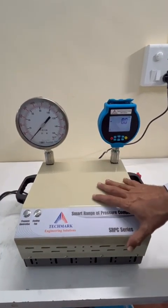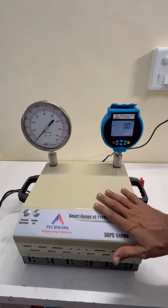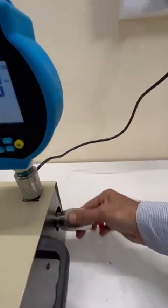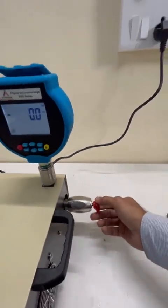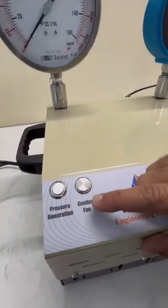Hello friends, this is smart range of pressure generator with automatic pressure generation. You can see this is fine adjustment valve, this is release valve, and this is pressure generation switch and this is cooling fan switch.